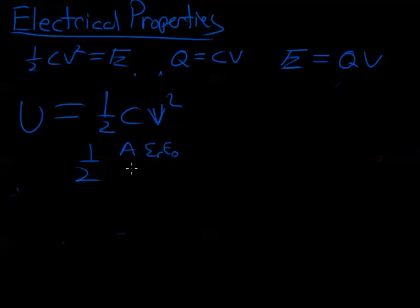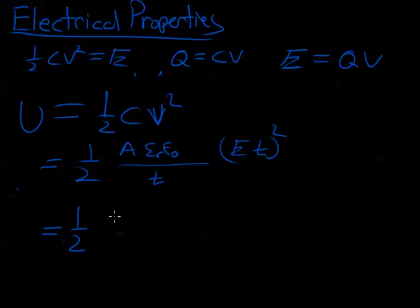The capacitance was the area times the relative dielectric permittivity times the dielectric permittivity of free space divided by thickness times voltage squared, which is the electric field times the thickness squared. So one-half area. We'll keep that as area. See, these two cancel out. So we're left with one-half times thickness times electric field squared.